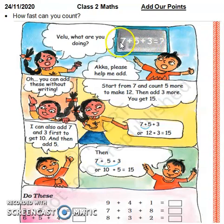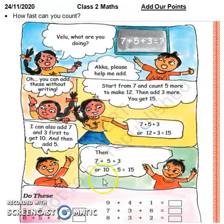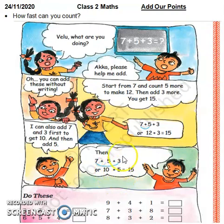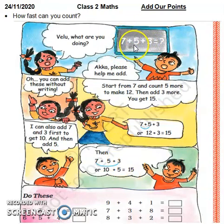अब इस बच्चे ने बिल्कुल ठीक कहा कि हम पहले 7 और 3 को add भी कर सकते हैं और 5 को उसके बाद। तो 7 प्लस 3 कितना होता है? 7 के बाद 3 आगे count करते हैं: 8, 9, 10 — तो 7 में 3 count on किया तो 10 आया। यहाँ 10 लिख दिया और प्लस 5 — तो 10 के आगे 5 count on करना है: 11, 12, 13, 14, 15। ठीक है।